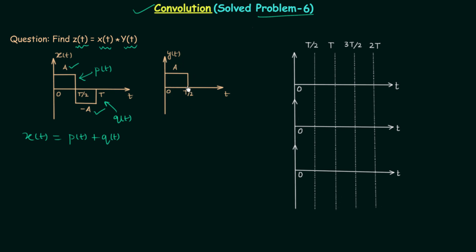Now let's focus on our second signal Y(t). It is also a signal having a rectangular pulse, but this time we only have one rectangular pulse with positive amplitude A. Comparing it with P(t), they are the same. So Y(t) is exactly the same as P(t). Q(t) has only one difference compared to Y(t): Y(t) has positive amplitude A and Q(t) has negative amplitude A, so Y(t) equals negative of Q(t).